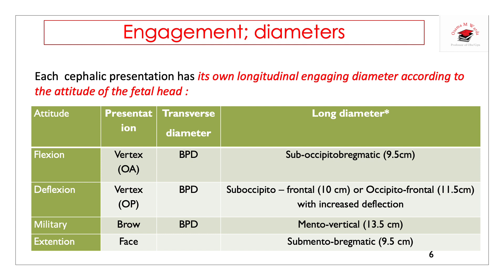In the military attitude of brow presentation, the longitudinal engaging diameter is the mentovertical diameter, which is 13.5 to 14 cm — this is undeliverable, as it is larger than any diameter of the pelvis. The largest diameter of the pelvis is the transverse at 13 cm, while the mentovertical diameter of full-term brow is 13.5 cm, making it an undeliverable presentation.